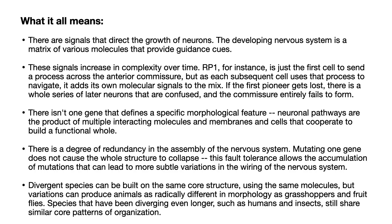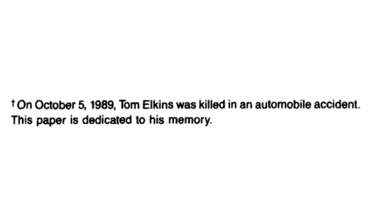Divergent species can be built on the same core structure using the same molecules, but variations can produce animals as radically different in morphology as grasshoppers and fruit flies. Species that have been diverging even longer, such as humans and insects, still share similar core patterns of organization. It's a great paper. Unfortunately, it was published posthumously — I have to mention that Tom Elkins died in 1989. We lost a good one.